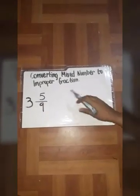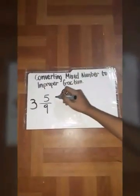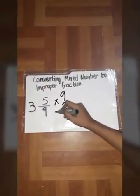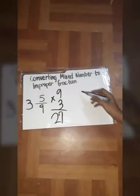Let us multiply the denominator by the whole number. So 9 times 3 equals 27. And let us add the numerator to our answer.